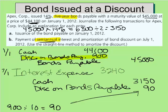That discount on bonds payable actually increases my bond interest expense over the life of the loan. That credit to discount on bonds payable reduces the earlier debit discount on bonds payable by $90 with each interest payment. So once we get through all ten interest payments, that discount will be completely written off.